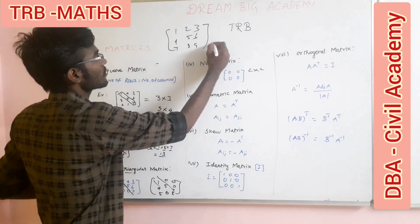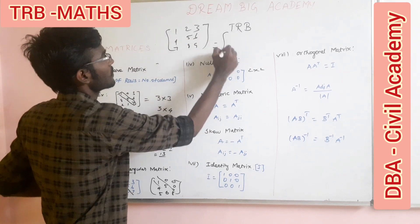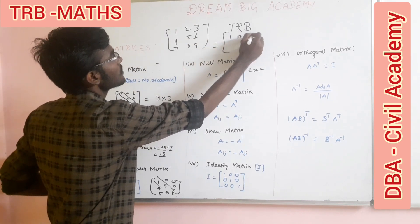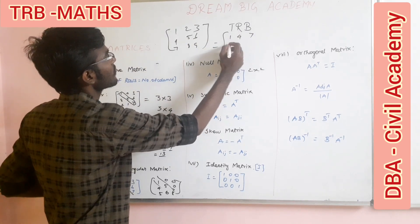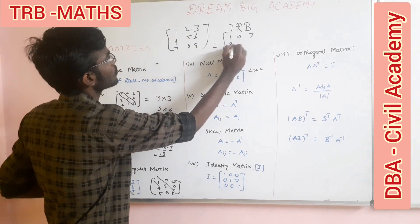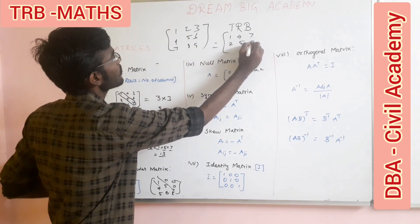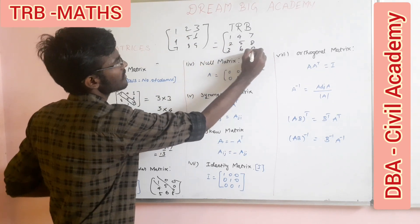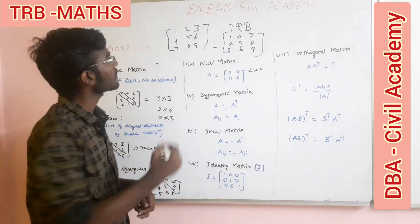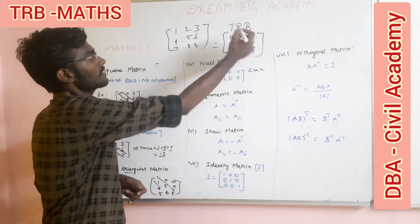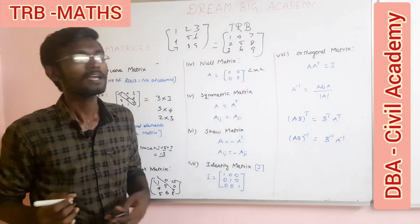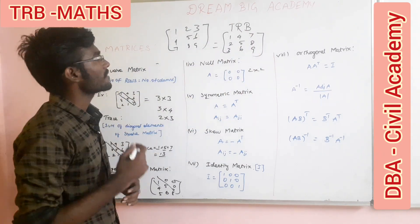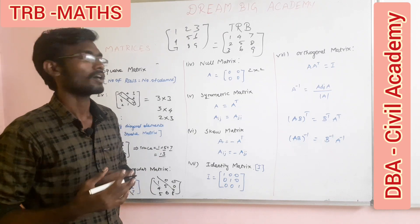Let's transpose this matrix. Reading column by column: one, four, seven — then two, five, eight — then three, six, nine. In the transposed matrix, the rows and columns are interchanged.